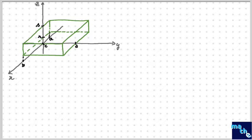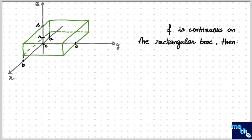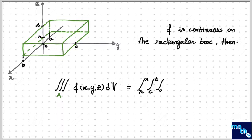Just as for double integrals, the practical method for evaluating triple integrals is to express them as iterated integrals. This means that if F is continuous on a rectangular box, then the triple integral over the region A of our function F can also be written as the triple integral from R until S for Z, C until D for Y, and A until B for X of our function F, dx, dy, dz.